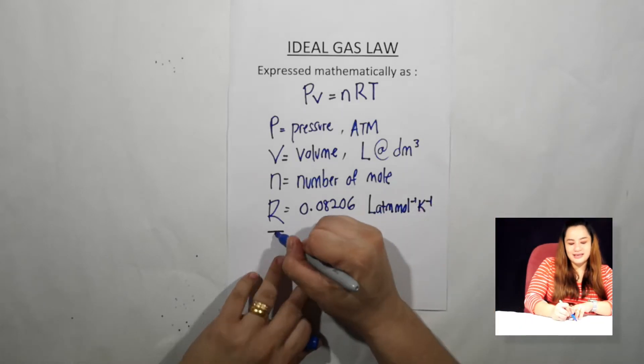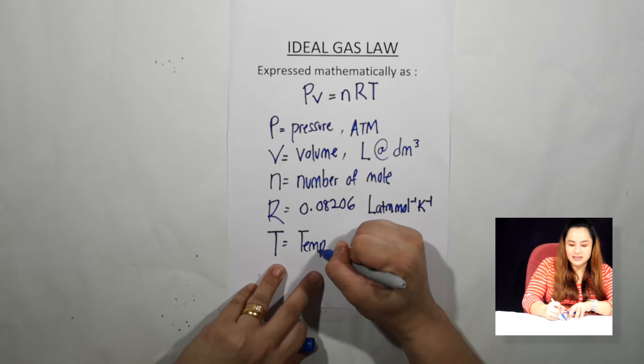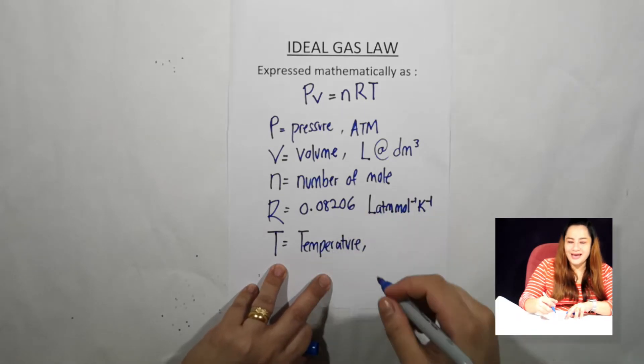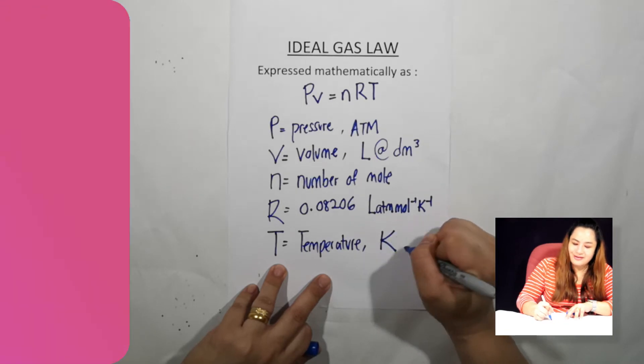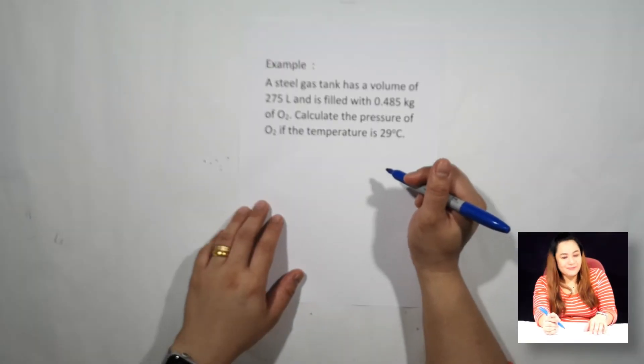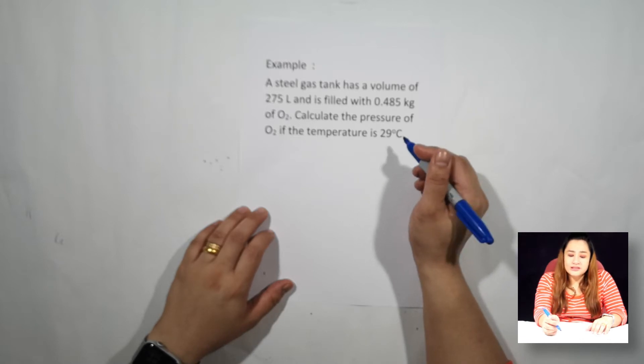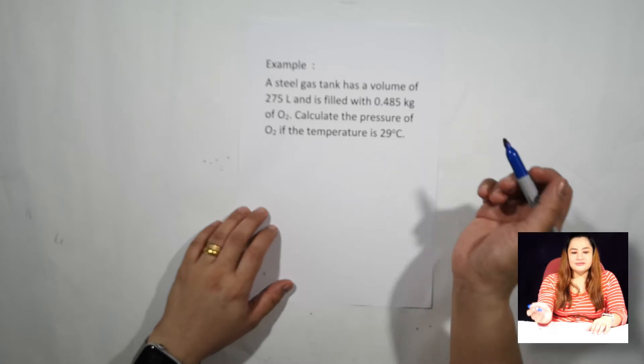And T is for temperature, often measured in kelvin. Let's look at the example. A steel gas tank has a volume of 275 liters and is filled with 0.485 kg of oxygen. Calculate the pressure of oxygen if the temperature is 29 degrees Celsius.